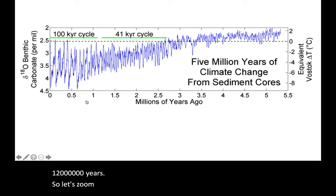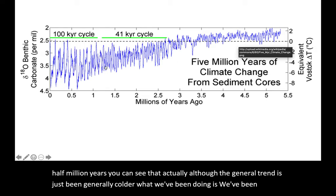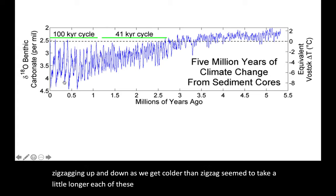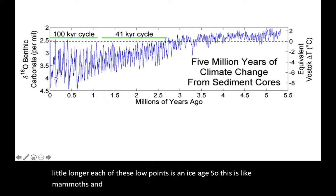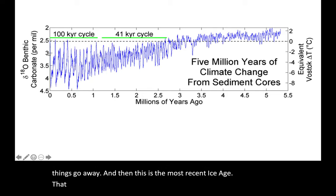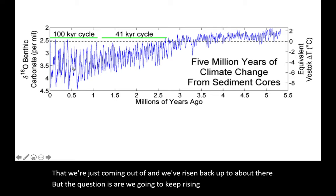As we get down to the last five and a half million years, you can see that although the general trend has just been generally colder, what we've been doing is zigzagging up and down. As we get colder, the zigzags seem to take a little longer. Each of these low points is an ice age — this is like mammoths and Neanderthals running around. And then boom, all those things go away, and this is the most recent ice age that we're just coming out of.